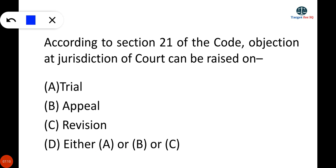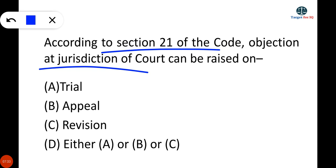The next question is: according to Section 21 of CPC, an objection to the jurisdiction of the court can be raised at — trial, appeal, revision, or anywhere? According to Section 21, objection to jurisdiction must be raised at the first instance, meaning at the trial stage.